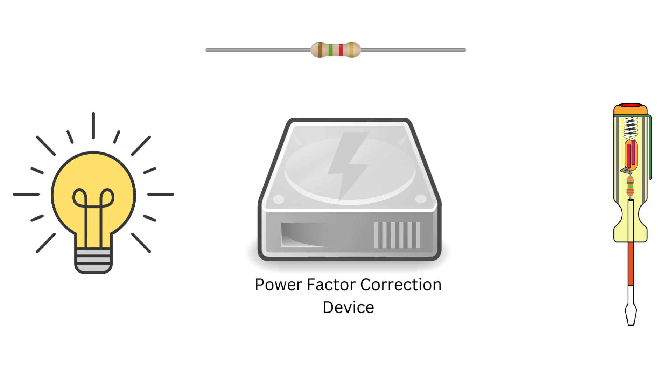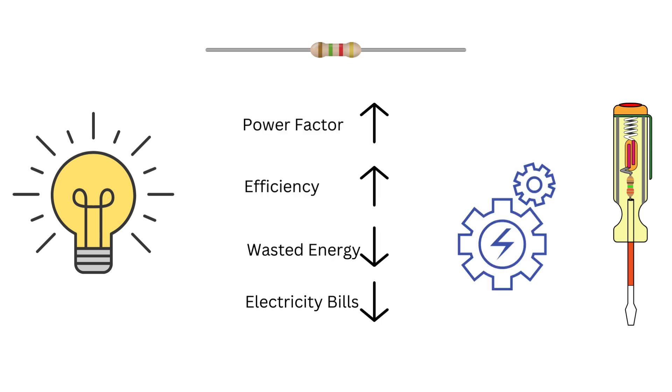That's why industries often use devices called power factor correction devices to improve their power factor. This makes the electrical systems more efficient and can save them a lot of money.